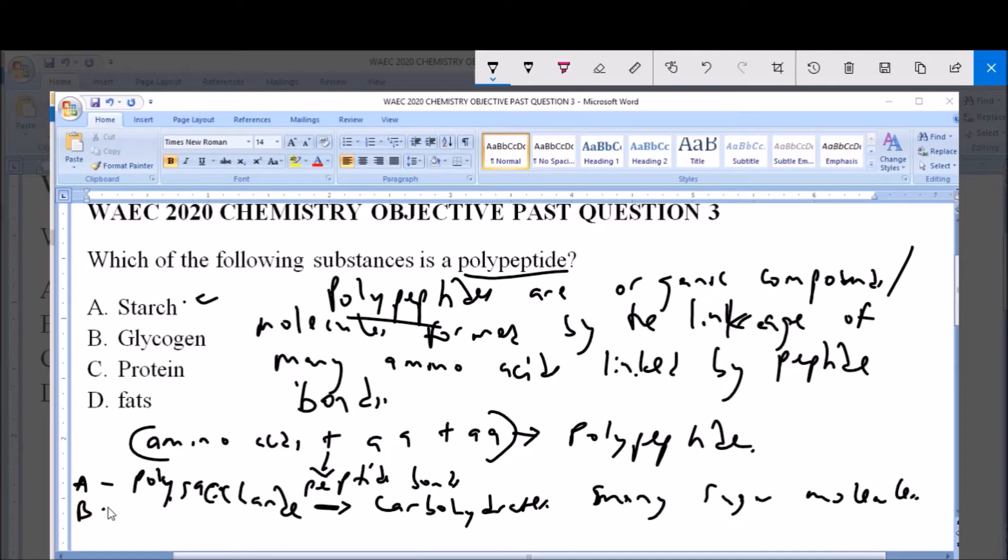Option B, which is glycogen, is also another example or another type of a polysaccharide. So it is a carbohydrate and not a polypeptide.